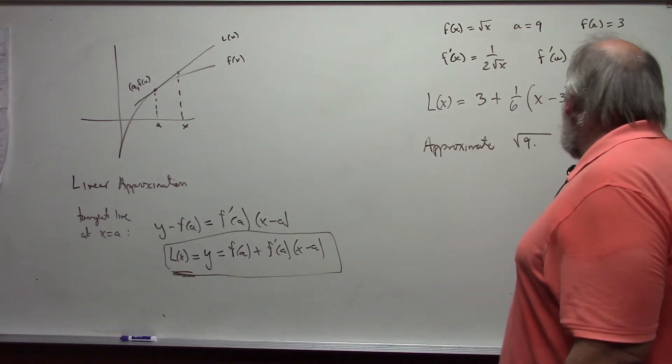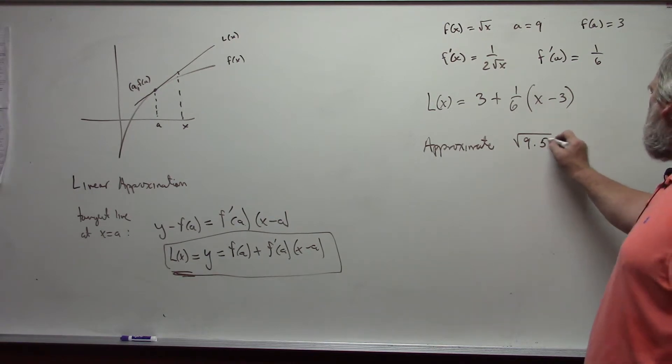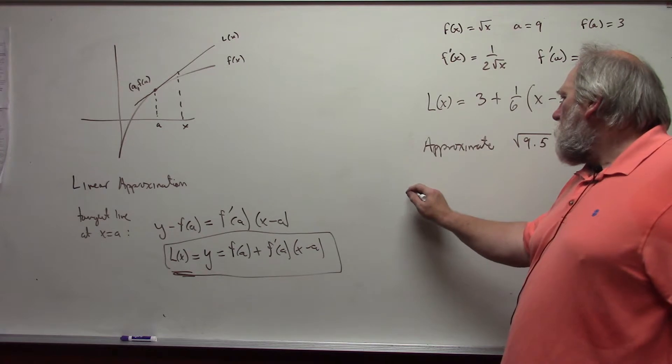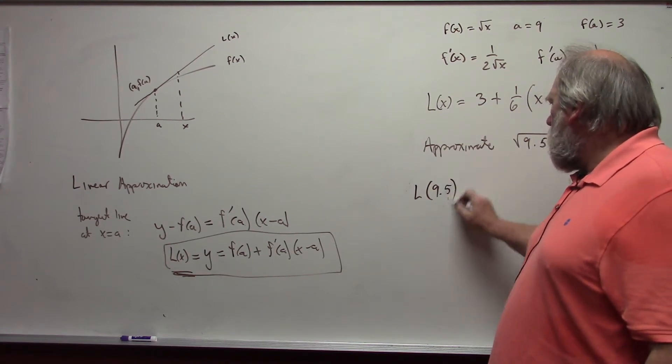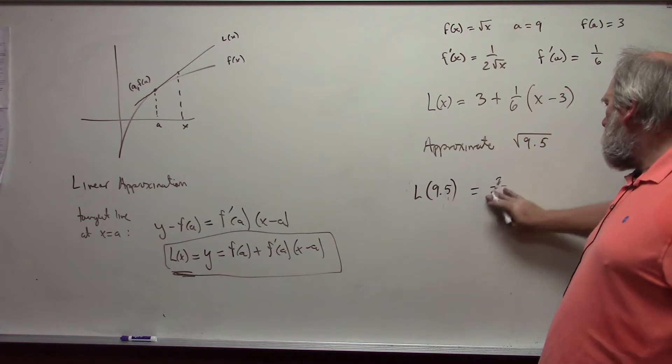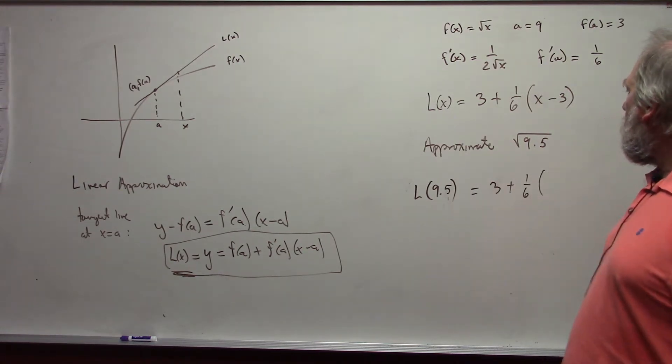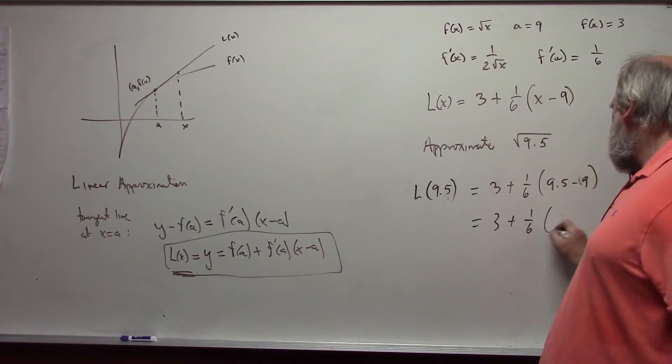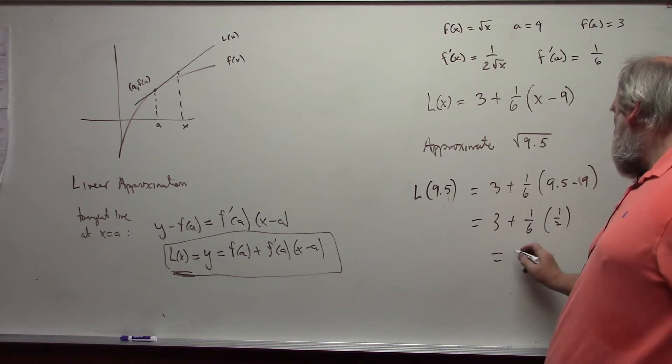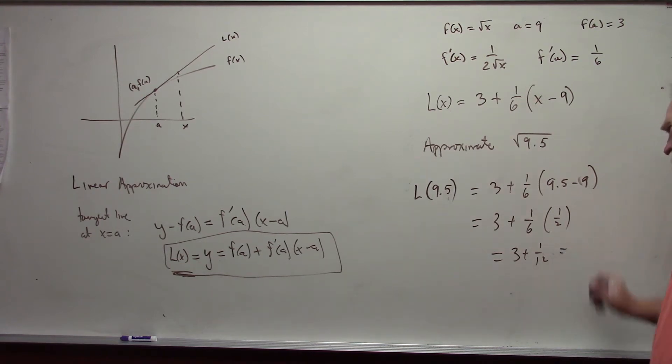L at 9.5, my linear value, would be three plus one-sixth of... and my value for x in this case is 9.5. Oops, x minus nine - a is nine. 9.5 minus nine. And so this becomes three plus one-sixth times one-half, or three plus one-twelfth.